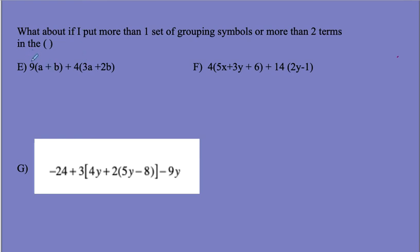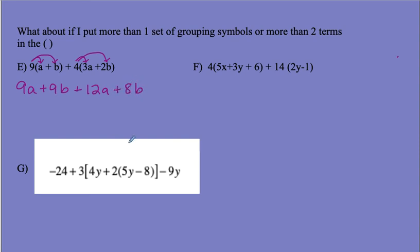In this case, I'm going to distribute the 9, getting 9A plus 9B, and distribute the 4, giving me 12A plus 8B. Then I combine the like terms, giving me 21A plus 17B.